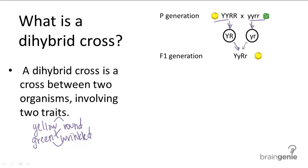So all the F1 generation offspring will be heterozygous for both color and shape: big Y, little y, big R, little r. And their phenotype will only be yellow round.